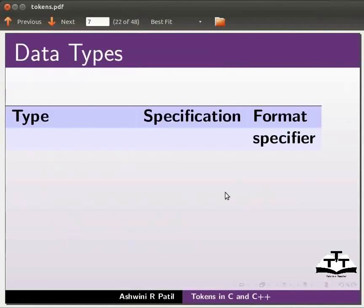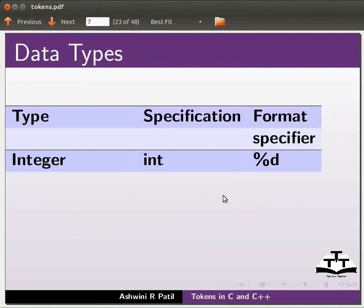Data types. Let us begin with integer data type. It is declared as int. If we want to print an integer data type, we will use %d as the format specifier. Similarly, we will use float and %f for floating point numbers.